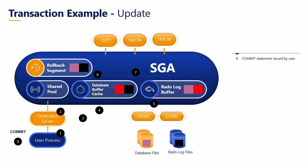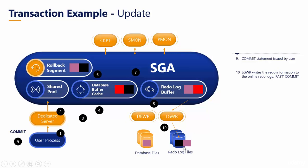In the ninth step, the user issues a COMMIT statement, meaning the user wants to permanently save the updated changes. Once the user issues the commit, the log writer takes the redo information and stores it in the redo log files. That's the tenth step.